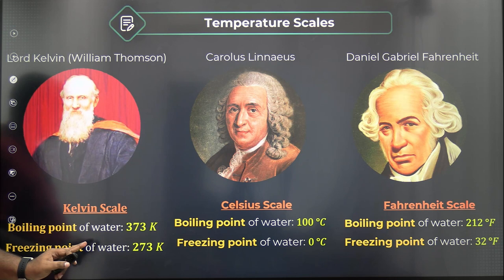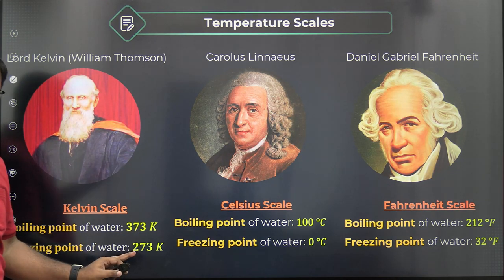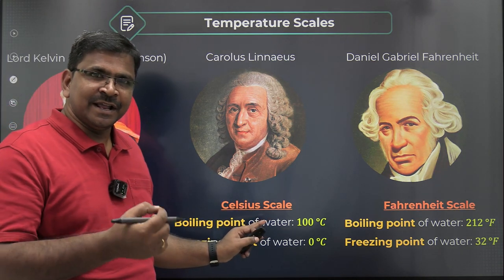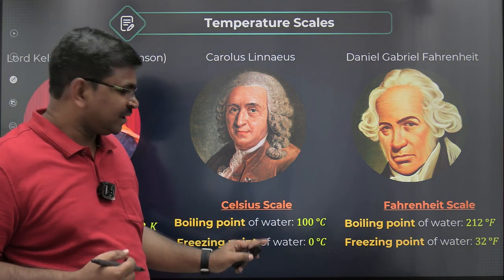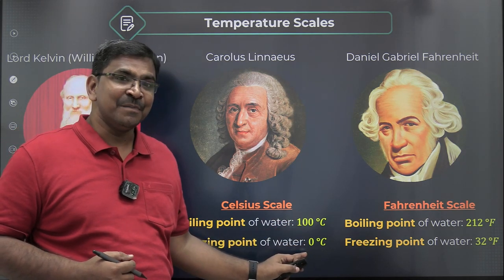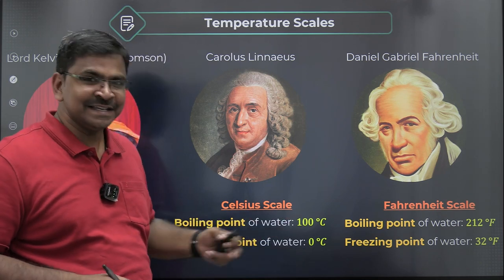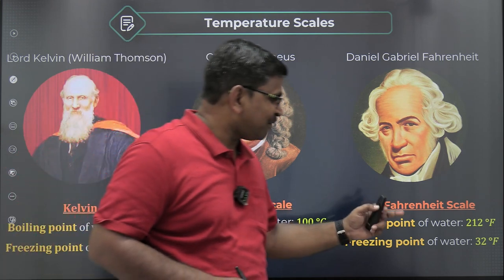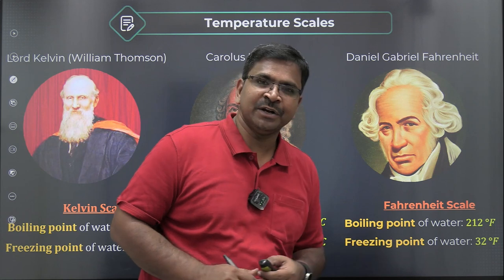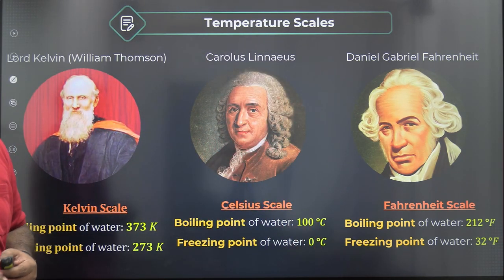They invented instruments for measuring temperature based on different scales. The Kelvin scale has a higher fixed point at 373 K and a lower fixed point at 273 K. Celsius took the boiling point at 100°C as the higher fixed point and the melting point at 0°C — called the ice point and steam point — as the lower. For Fahrenheit, the boiling point is 212°F and the melting point is 32°F.